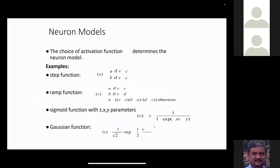There are different types of activation functions. A step function outputs zero if v is less than some threshold, and one otherwise. A ramp function linearly increases between two values. The problem with both the step function and the ramp function is that they are not differentiable at every point — not differentiable at the corner values.